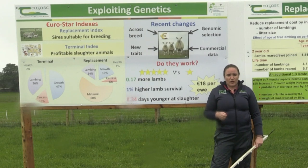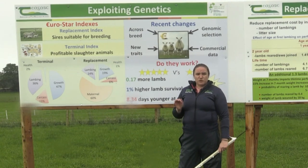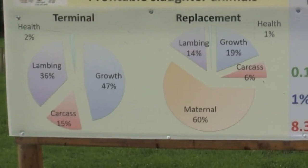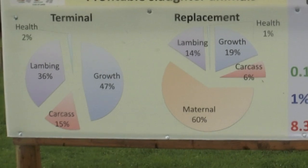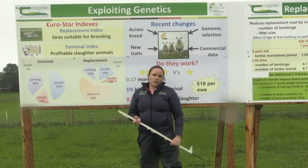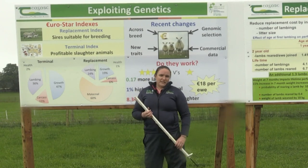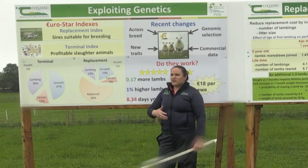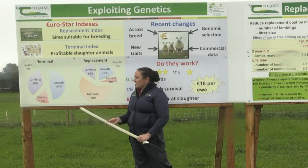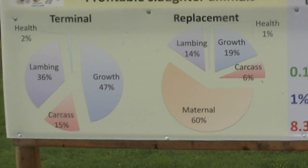In the terminal index you can see it has a different weighting across similar traits. Remember, the terminal index is for buying a ram where most lambs are going for slaughter. The maternal component is gone — so if you're keeping replacements, select on the replacement index; if you want a terminal-type ram, this is the index to focus on. Growth plays a very important part, as the faster the ram's lambs reach slaughter weight the better. Lambing also has a very important weighting of about 36%.